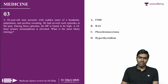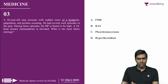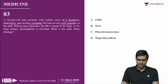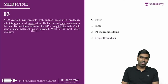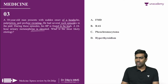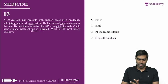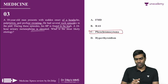Question three: a 30-year-old man with sudden onset headache, palpitations, and profuse sweating, with several such episodes in the past. During episodes, BP is high, and 24-hour urinary metanephrines are elevated. The options are fibromuscular dysplasia, renal artery stenosis, pheochromocytoma, or hyperthyroidism. The correct answer is pheochromocytoma, which is a type of paraganglioma.